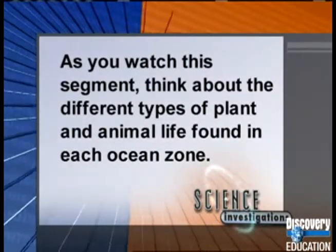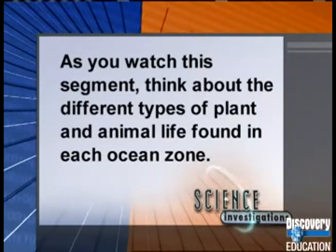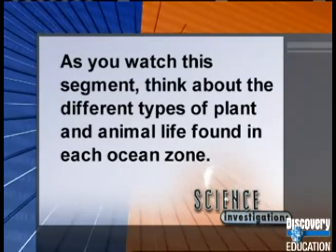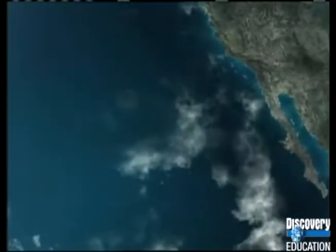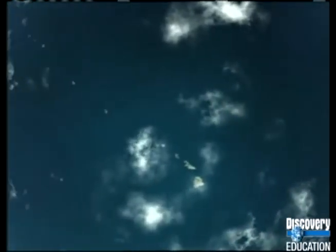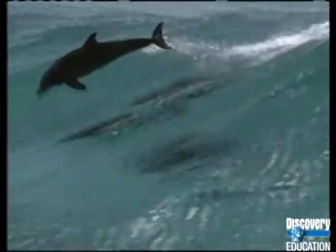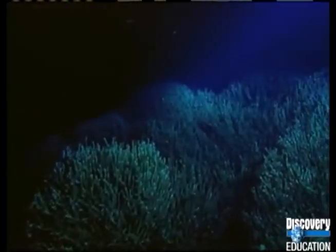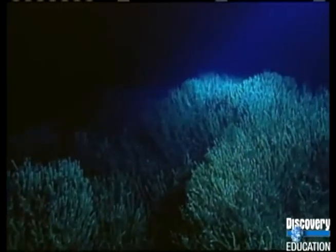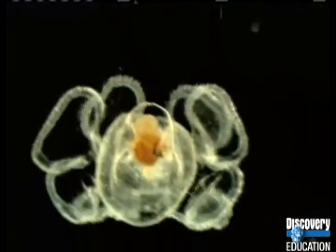As you watch this segment, think about the different types of plant and animal life found in each ocean zone. Even though oceans cover more than 70% of Earth's surface, until recently very little was known about ocean life. That's because exploration of the deepest zones of the ocean is complicated by near-freezing water temperatures, extremely high water pressure, and complete darkness. Using submersibles, researchers are beginning to discover exciting information about the amazing diversity of underwater life.